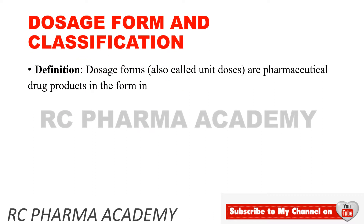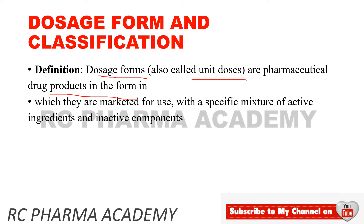Dosage form definition: A dosage form is a unit dose pharmaceutical product. It is a specific mixture of active ingredients and inactive components. Active ingredients are combined with inactive ingredients such as diluents, suspending agents, emulsifying agents, sweetening agents, and other inactive components.